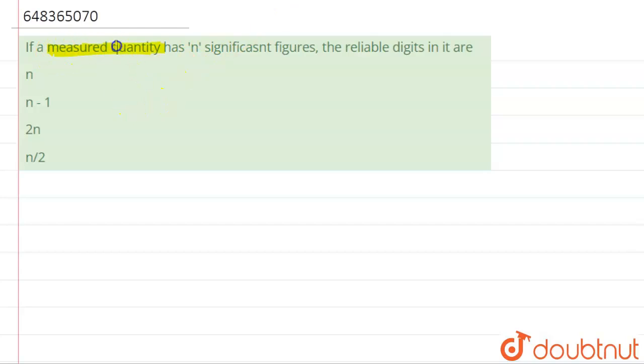The question says that a measured value has n significant figures. The reliable digits in it are... so basically